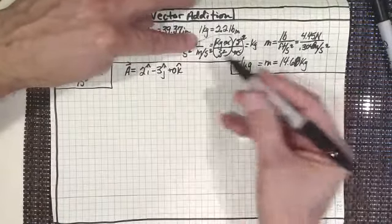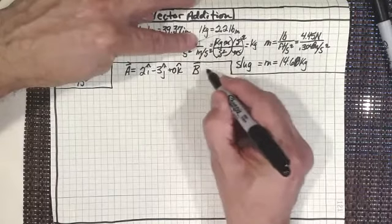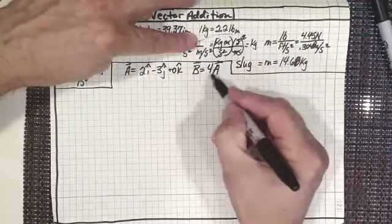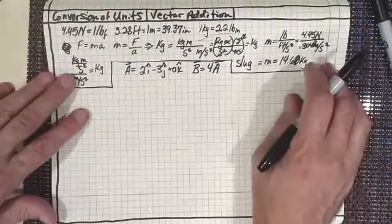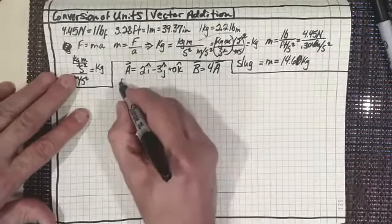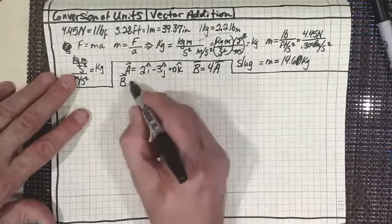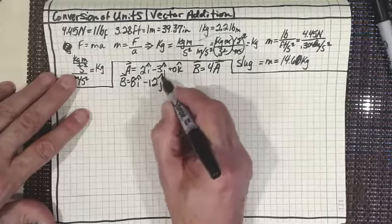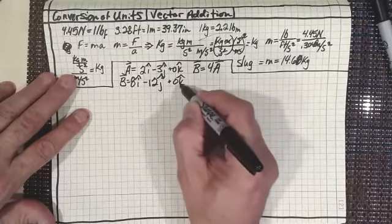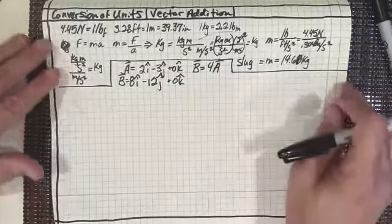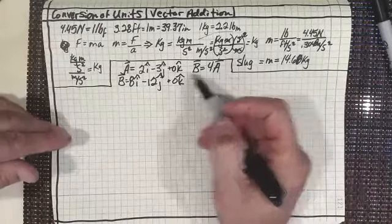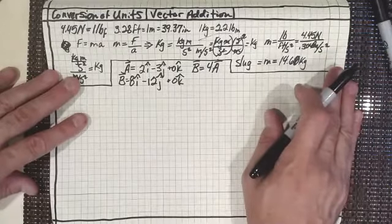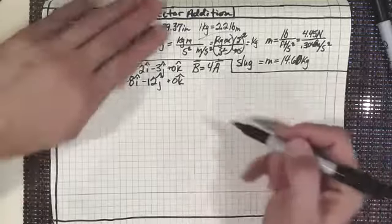Let's say I wanted another vector b, which was 4 times vector a — that's scalar multiplication of a vector. Then b would be 8i-hat minus 12j-hat plus 0k-hat. A scalar times a vector just increases the magnitude of the vector; it doesn't change the angle, but it does change the magnitude.